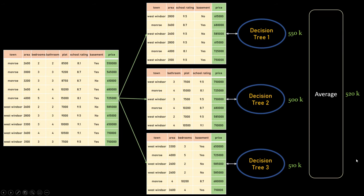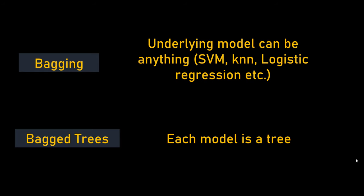Random forest is basically a bagging technique but with one additional thing: we randomly pick features as well. The difference between bagging and bagged trees is that in bagging the individual model can be SVM, KNN, logistic regression, or pretty much any model, whereas in bagged trees — and random forest is a bagged tree — every model you train is a tree. So I hope the theory is clear; let's move on to Python coding using scikit-learn.